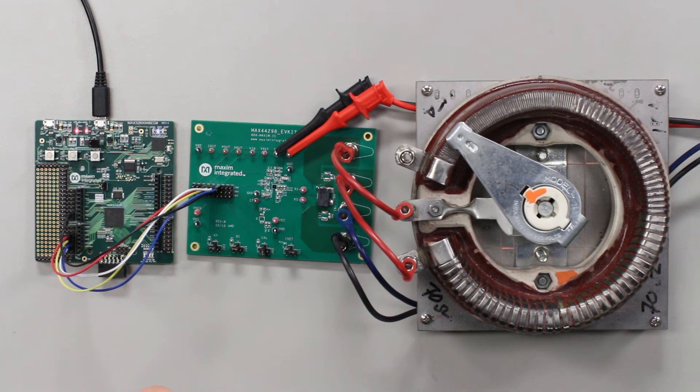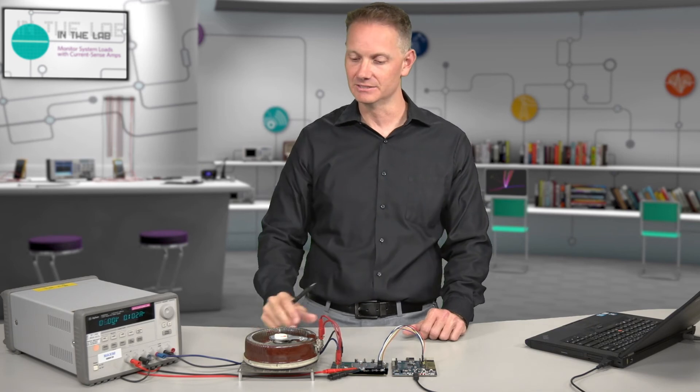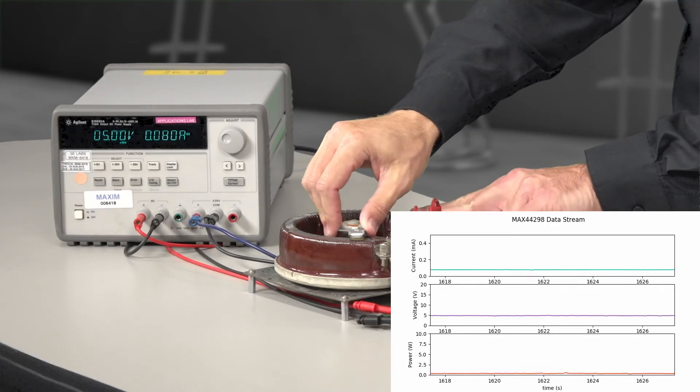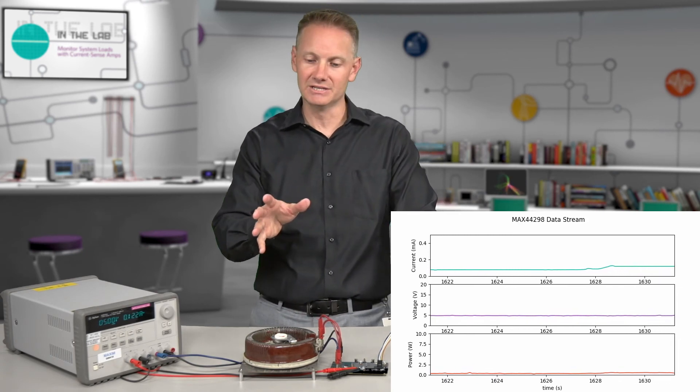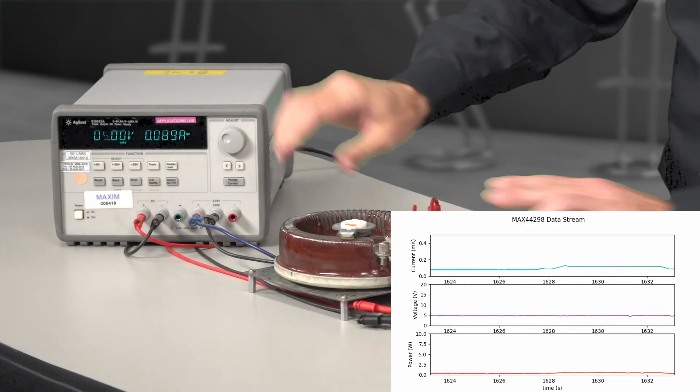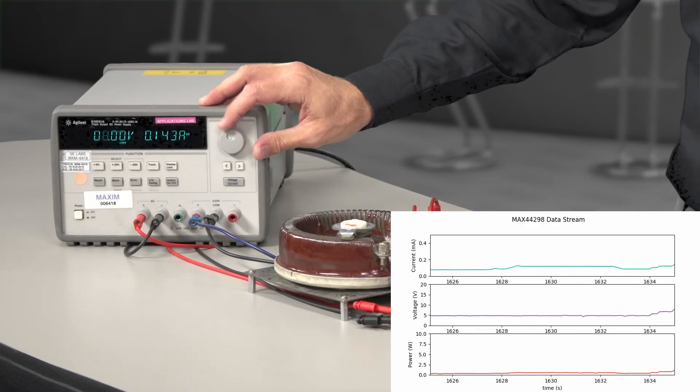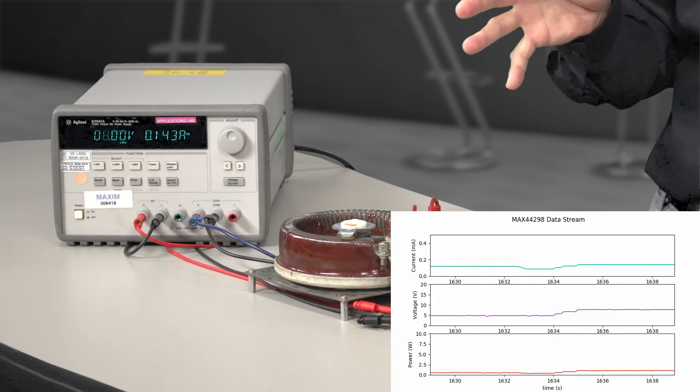That microcontroller has got a 16-bit ADC inside of it. And so we're taking those readings and displaying them on our laptop here. And I'll walk you through that in just a second. So as we adjust the resistive load here, you can see that the current and the power changes. And then if we dial that back down and go adjust the voltage here, you can see that change on screen as well and capture in real time.